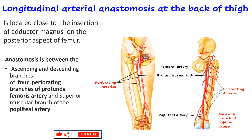The ascending branch of the first perforating artery also participates in the cruciate anastomosis. The descending branch of the fourth perforating artery anastomoses with muscular branches arising from the popliteal artery. So this longitudinal anastomosis connects with the cruciate anastomosis above and with the anastomosis around the knee joint below.